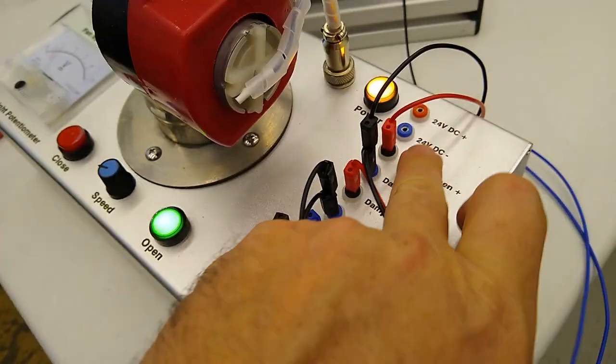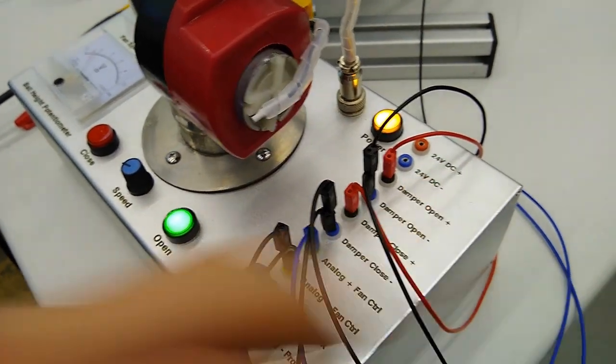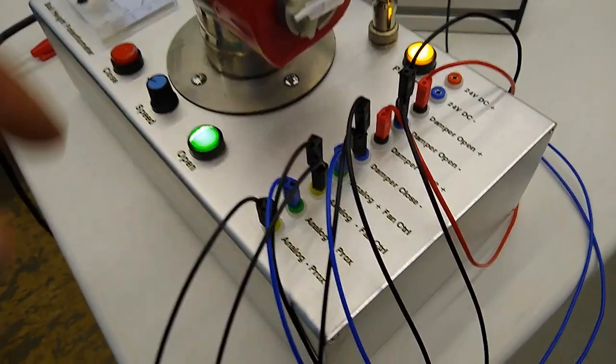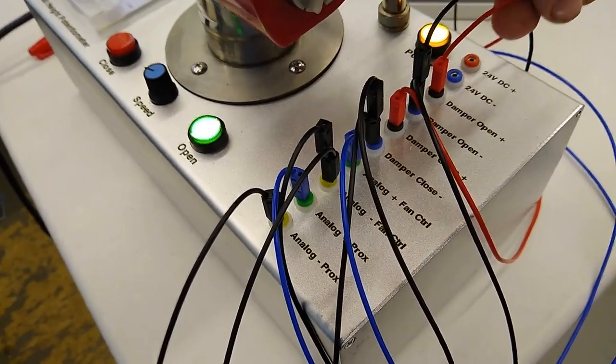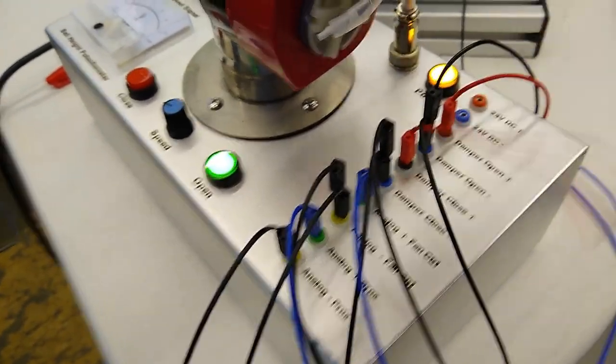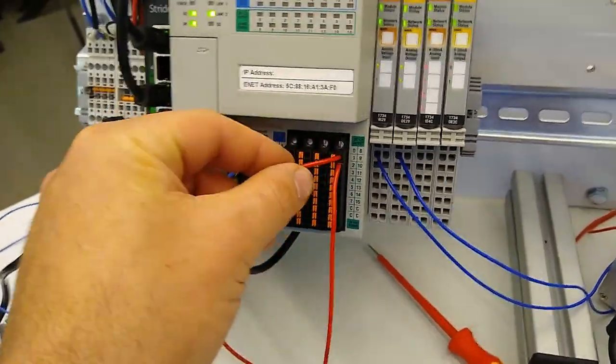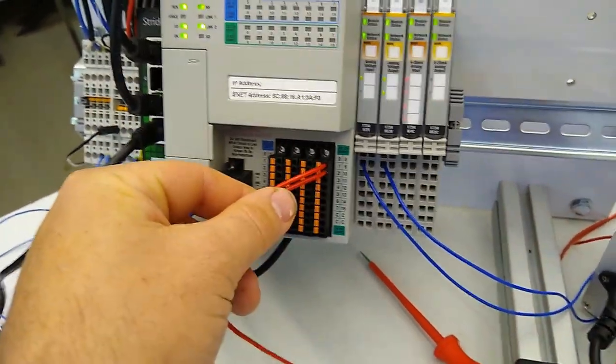Now if you wanted to have this completely separate it does have its own power supply built in. We're not actually using it and then we're going to have damper open and damper closed. These two wires here are going to go to discrete outputs on our CompactLogix PLC and we have them wired to number eight and number nine.